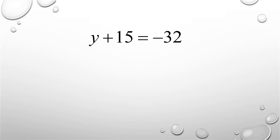That gives us y on the left side of the equation. Our 15s cancel one another out since we have positive 15 minus 15. On the right side of our equation, we have negative 32 minus 15.